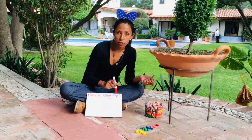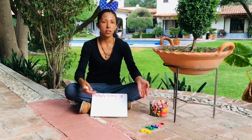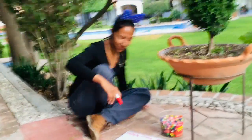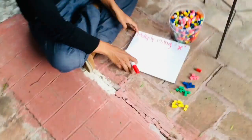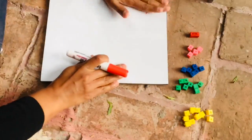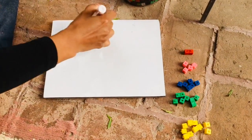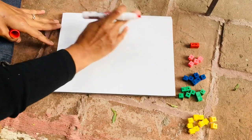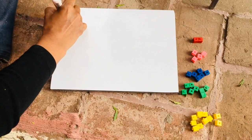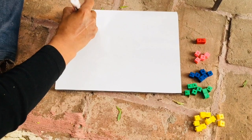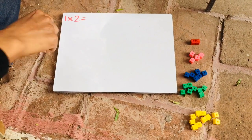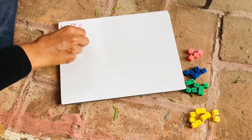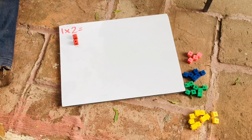Today we're just going to start using this sign. I want you to come closer so you can see how we're going to do it. We're going to practice our two times table. The first one is one times two, and that means that I will just add once the number two — one, two blocks.